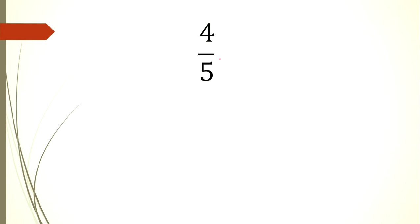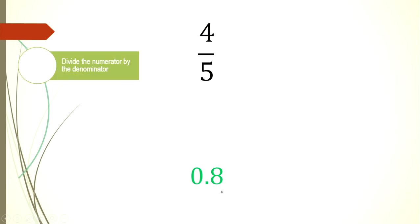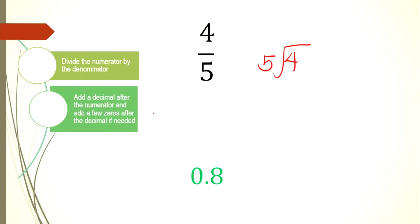We have the example 4/5. The answer is 0.8. The numerator 4 is our dividend and 5 is our divisor. We cannot divide 4 by 5, so we add a decimal after the dividend and add a zero, giving us 40. We copy the decimal point exactly at the same place in the quotient.